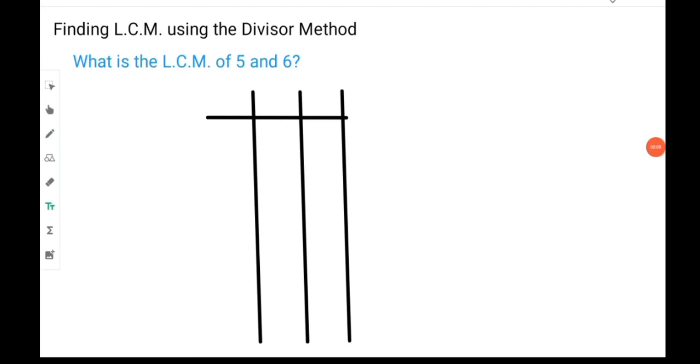Let us move on to finding the LCM of two numbers using the divisor method. When you are using the divisor method to find the LCM of two numbers, you need to know some prime numbers. You need to know the first prime numbers going up until about 19, which you will use on a regular basis. The prime numbers listed here are 2, 3, 5, 7, 11, 13, 17, and 19. Of course, there are more prime numbers, but these ones would be used more frequently.